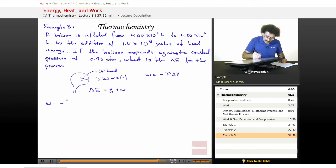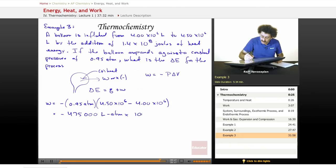So the work is equal to negative 0.95 atmospheres. That's the external pressure. And again, pressure volume work, P delta V, that P is the external pressure against which you're pushing, or that's pushing on the system. Times 4.50 times 10 to the sixth minus 4.00 times 10 to the sixth. And we end up with minus 475,000 liter atmospheres. And then when we multiply by the conversion factor 101.3 joules per liter atmosphere, we end up with a total of negative 4.8 times 10 to the 7 joules of work.